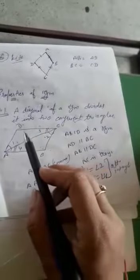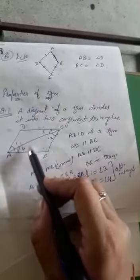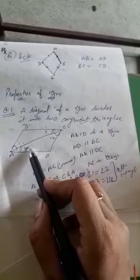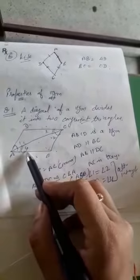To recap: we were given parallelogram ABCD with diagonal AC. We used alternate interior angles — angle 1 = angle 2, angle 3 = angle 4 — and took AC = AC as the common side. By the ASA criterion, the triangles are congruent. This was the first property of a parallelogram.